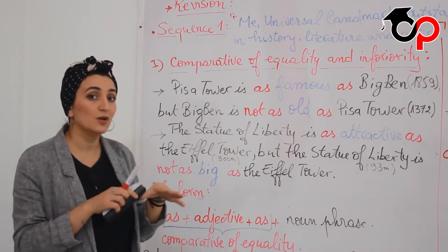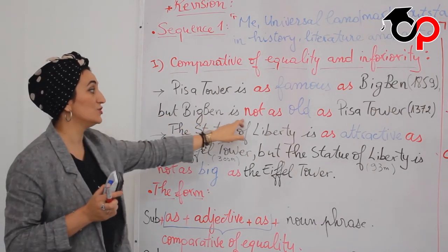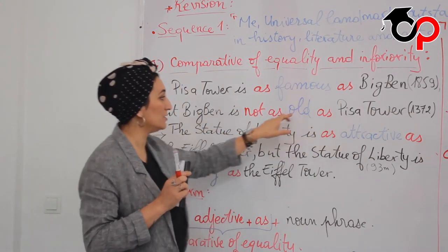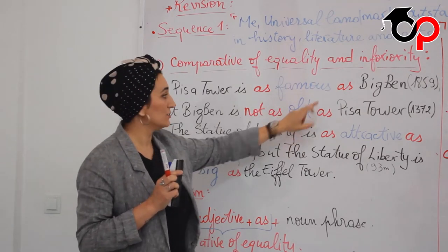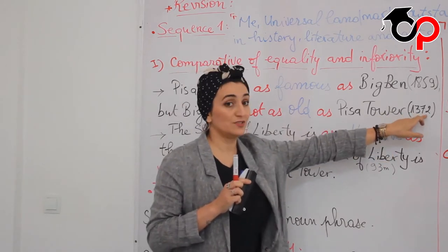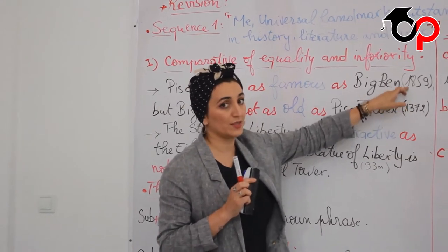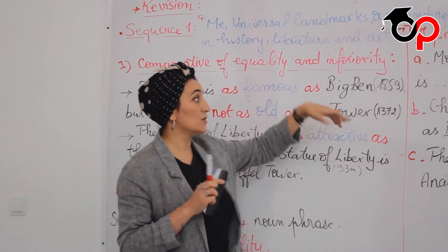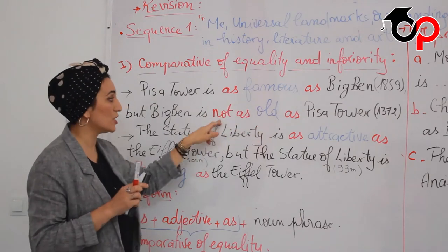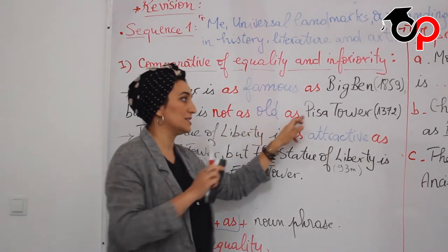They share the same quality. But Big Ben is not as old as Pisa Tower. Here we use the adjective 'old' to say that Pisa Tower is an ancient monument. It was built in 1372. However, Big Ben was built in 1895. There is a big difference between them. So Pisa Tower is older than Big Ben — they are not equal. We use the structure: not as old as.